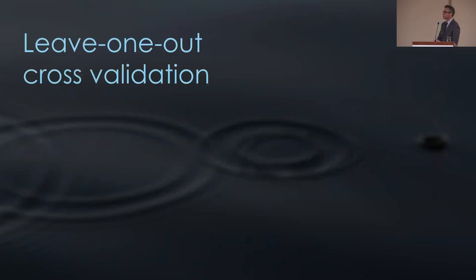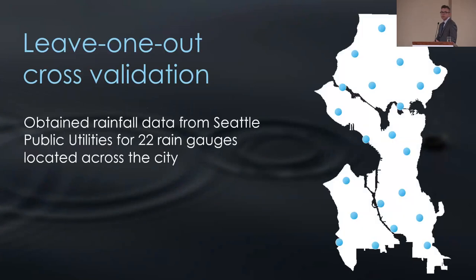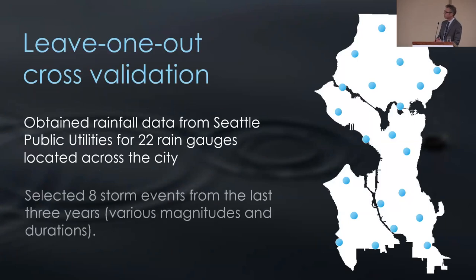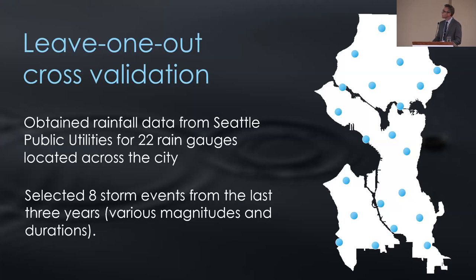To assess accuracy, we performed a leave-one-out cross-validation. Looking at Seattle, we have 22 rain gauges distributed throughout the city. We obtained about five or six years of data and selected about eight storm events from the last three years, choosing events of various magnitudes, durations, intensities, and distributions to get a nice selection of storms. We have data at each one of these gauges for each one of those events.